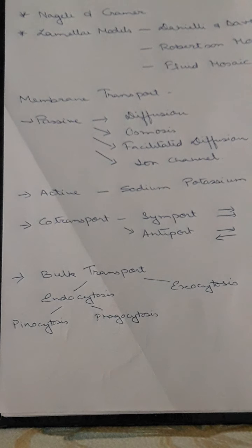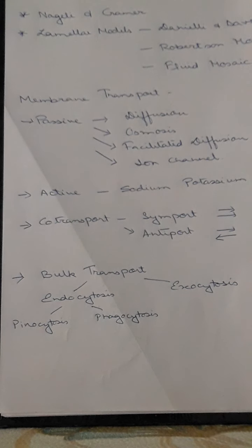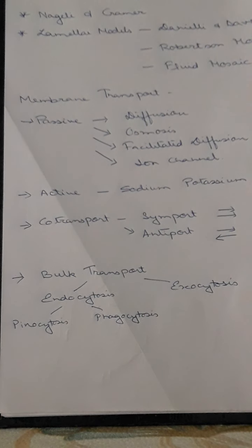While studying the cell membrane we come across the term membrane transport — meaning the cell membrane helps in transportation of certain substances. Membrane transport can be divided into four main types: passive transport, active transport, co-transport, and bulk transport.